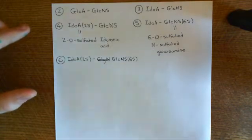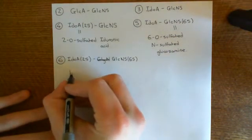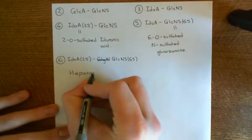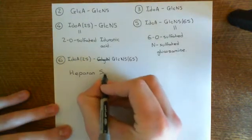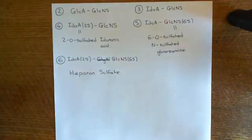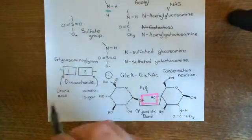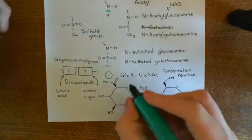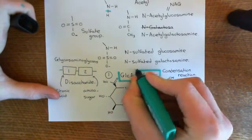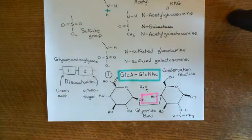If you want to make the glycosaminoglycan heparan sulfate, you mainly use one particular disaccharide. The main disaccharide used in heparan sulfate is glucuronic acid bound to N-acetylglucosamine — that is the master disaccharide of heparan sulfate, and it is used over and over again.